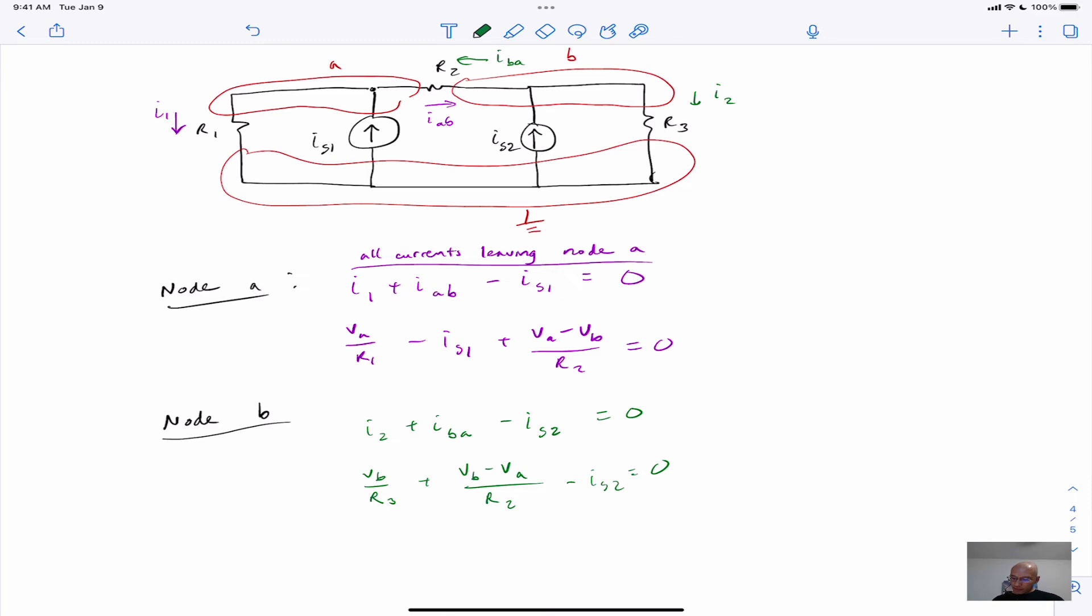So from these equations, we can form our matrix equation. Let's just write it as a system of two equations and two unknowns. So for node A, we have V_A and it has prefactors of these. And V_B has a prefactor of negative 1 over R2. Okay, then for node B, we have a V_A term.